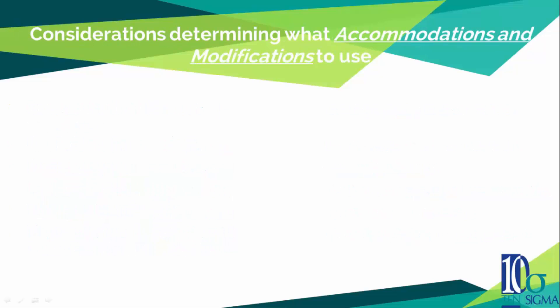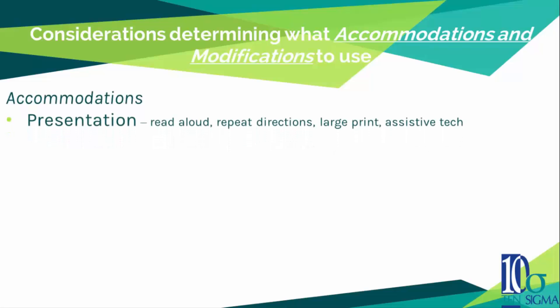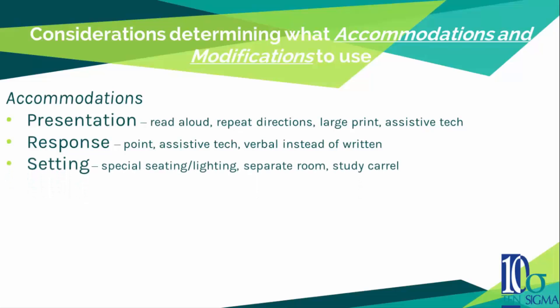When working with students with multiple disabilities, it's important to consider what accommodations and modifications to use. There are four main accommodation groups. Presentation — you could read aloud, repeat directions, use large print, or use assistive technology. There are accommodations in response, such as pointing, assistive technology, or verbal instead of written responses. In setting, there could be special seating or lighting, a separate room, or a study carrel. And timing and scheduling — the student could have extended time or frequent breaks.